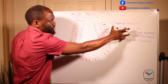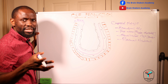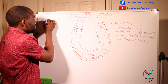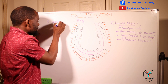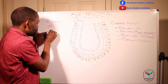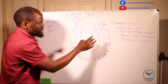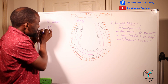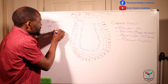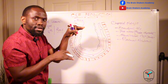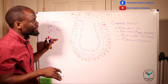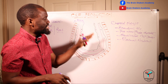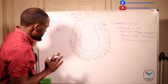The choroid plexus is situated in the ventricles. When looking at the ventricular system of the brain, you have four main ventricles: two lateral ventricles — left and right — then the third ventricle and the fourth ventricle. The choroid plexus is found within the lateral ventricles, while in the third and fourth ventricles it is found on the roof. Most of the cerebrospinal fluid that is formed is produced by the choroid plexus found in all four main ventricles.